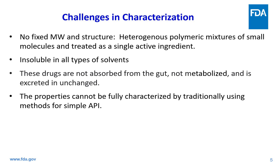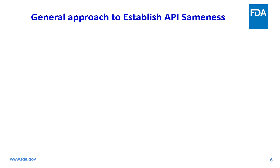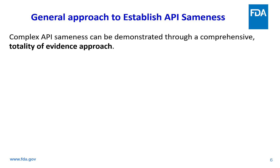Hence, characterization using traditional methods to establish API sameness is difficult. Each complex molecule possesses different properties and challenges, so the principles to determine API sameness for each complex API are also different. Therefore, a totality of evidence approach is recommended for API sameness for cross-coupled polymers.